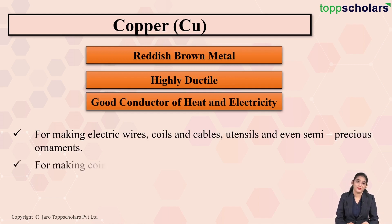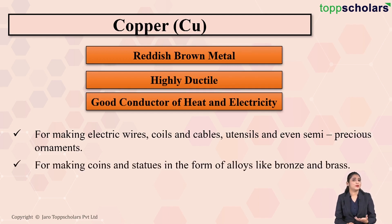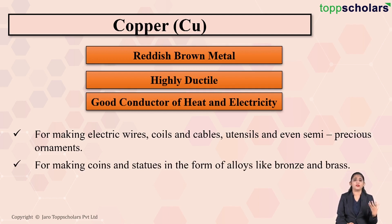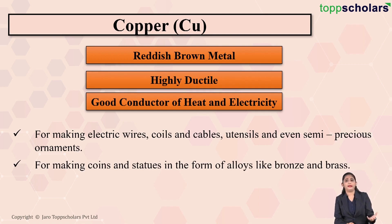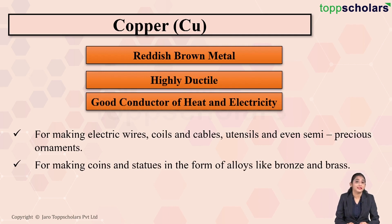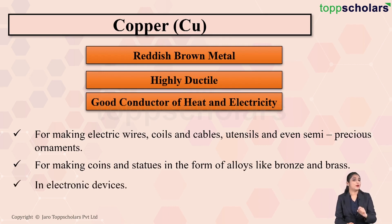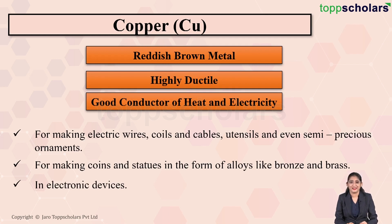Copper is also used for making semi-precious ornaments, coins, and statues, generally in the form of alloys. Bronze is an alloy of copper and tin, whereas brass is an alloy of copper and zinc. Copper is also used in electronic devices, since it is a good conductor of electricity.